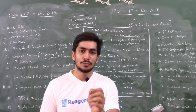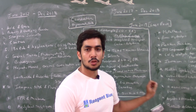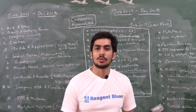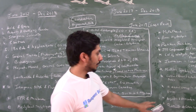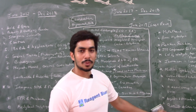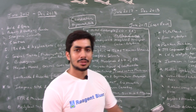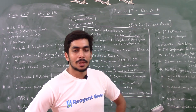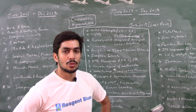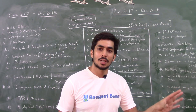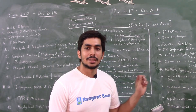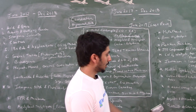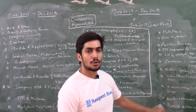Agostic and anagostic interactions are an important topic under cyclometallation, but students often don't pay attention to differentiating between them. It is covered very well in the book by B.D. Gupta and A.J. Elias, so you can study agostic and anagostic interactions from there.